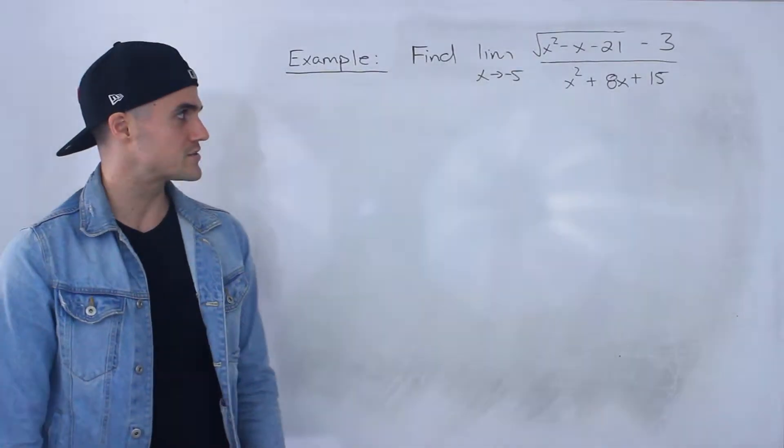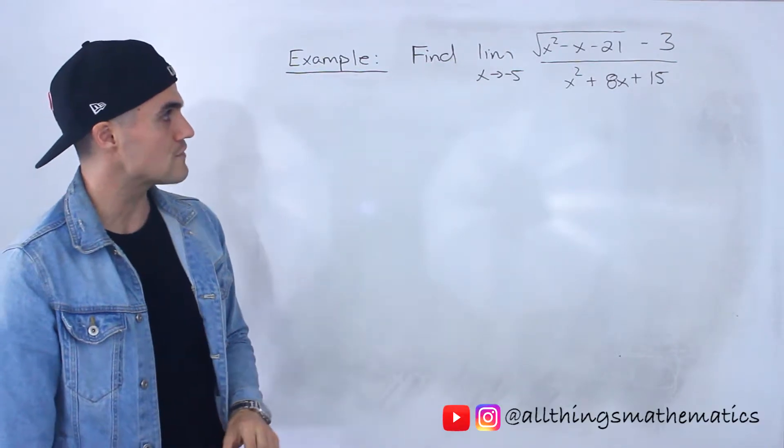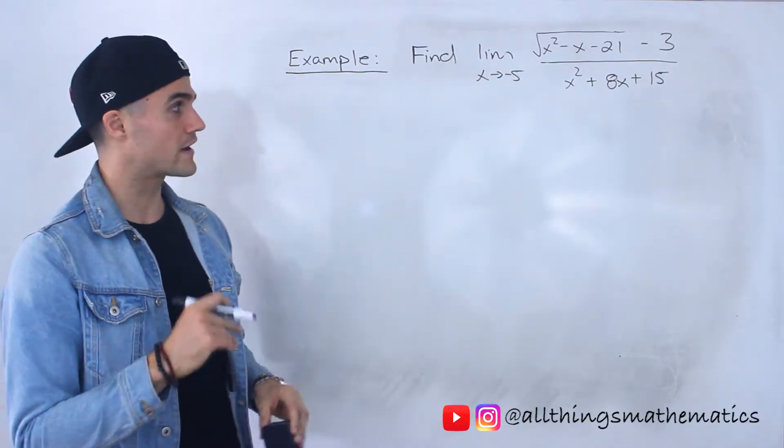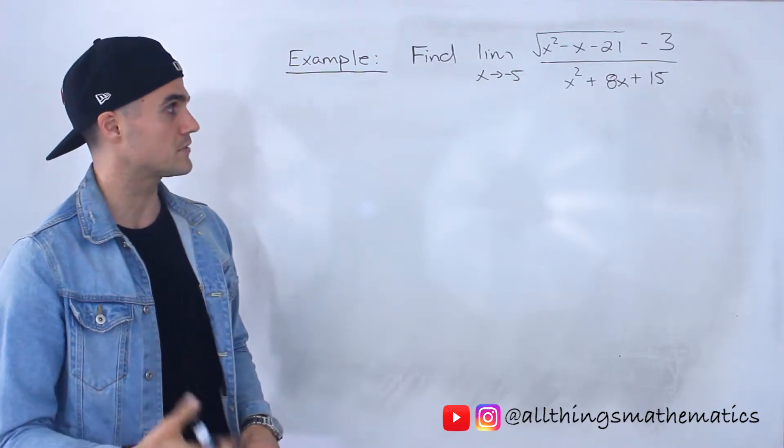What's up guys, welcome back. Patrick here, moving on to the next example. We've got to find this limit here: limit as x approaches negative 5 of the square root of x squared minus x minus 21 minus 3, over x squared plus 8x plus 15.